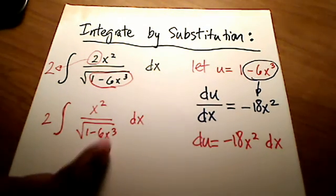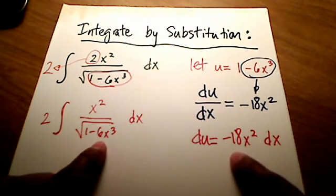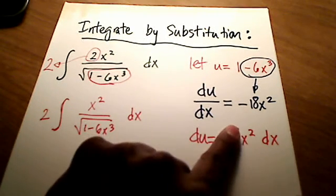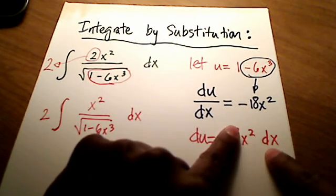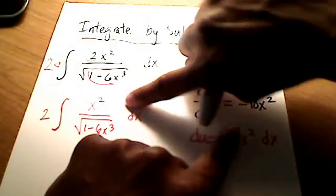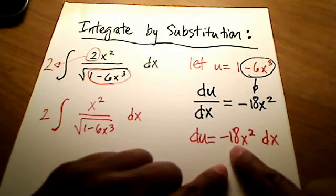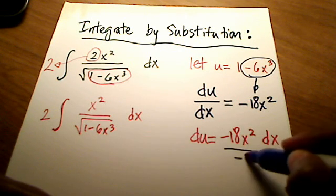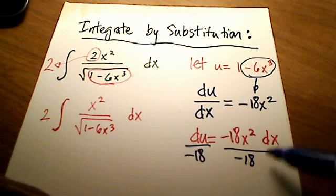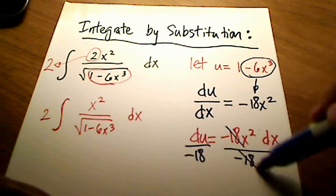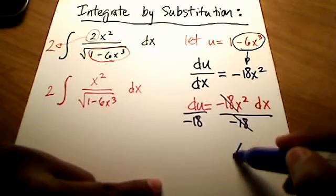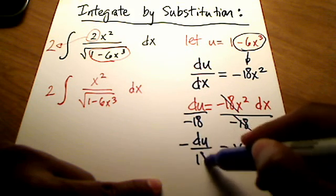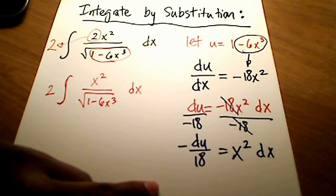As I look back at the original problem, I don't see a negative 18x squared dx. I do see, let me take away the negative 18 for a second. I do see an x squared dx. Look, it's right here, x squared dx. There it is. But I don't see a negative 18 in front of it. So I'm going to do this other trick here. Let's divide both sides by negative 18 of this equation over here. If I do that, notice the negative 18s are gone over here. And I'm left with x squared dx is equal to negative du over 18. Or you can put the negative with 18 on the bottom. It doesn't matter.